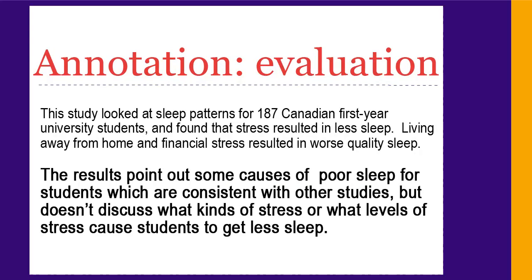The second part of the annotation evaluates the source and puts it into the context of other research on your topic. You might discuss how the source contributes to your understanding of the topic, whether it has any limitations or flaws, or how it's similar or different from other research. This part is also two to three sentences long. You'll need to be very concise when writing your annotation to be sure you can fit all the important points into only a few words.